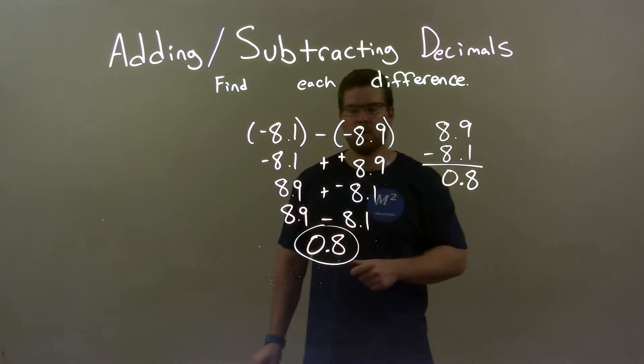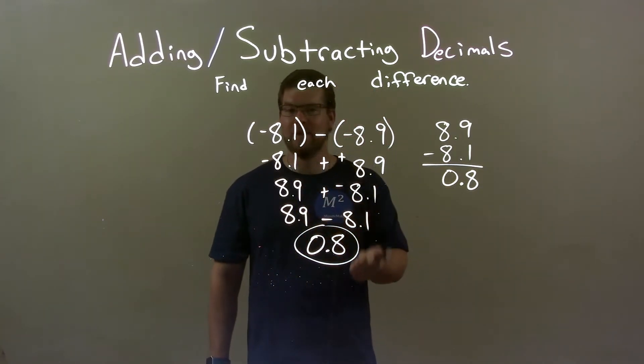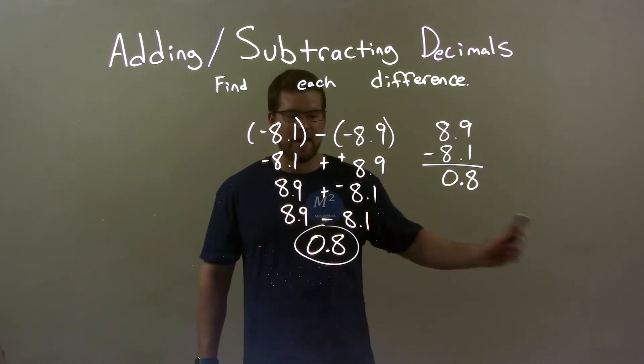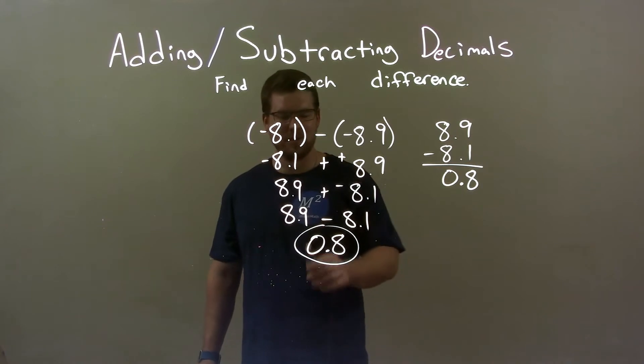So 8.9 plus a negative 8.1. Well, adding a negative is the same thing as subtraction. So 8.9 minus 8.1. Did that, and I got my final answer of 0.8.